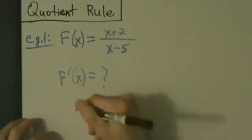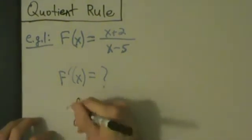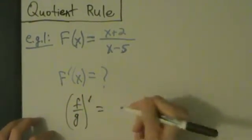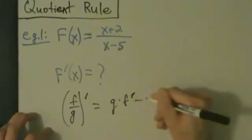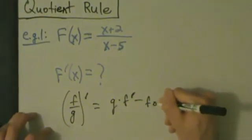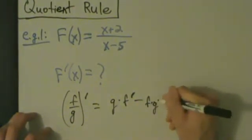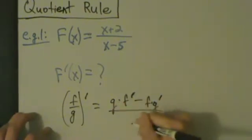So remember what the quotient rule says. If you want to take a derivative of the top divided by the bottom, that's going to be bottom times the derivative of the top minus the top times the derivative of the bottom, all divided by the bottom squared.